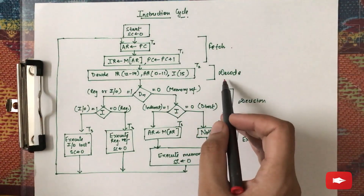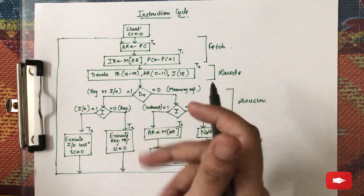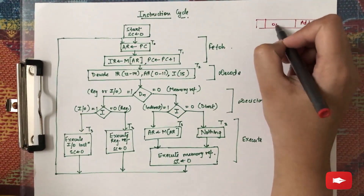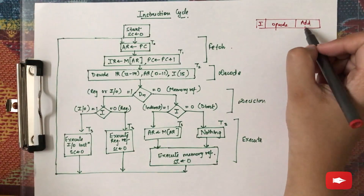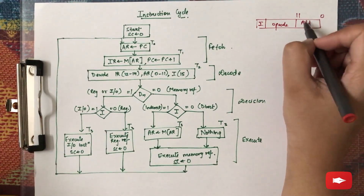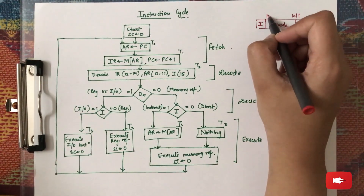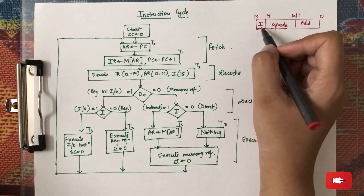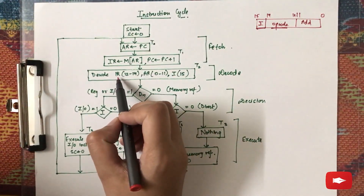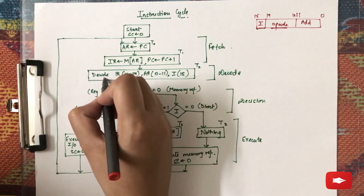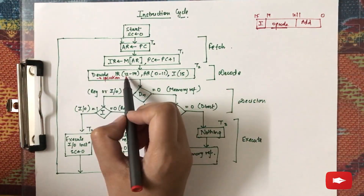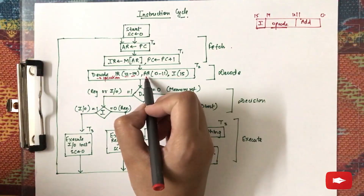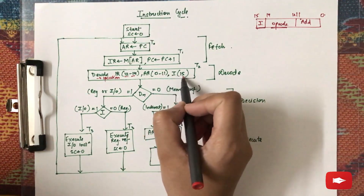In the decode phase, we are actually decoding the instruction format. The instruction format is divided into three parts: address, opcode, and the high part. Bits 0 to 11 are the 12 bits defining the address part, bits 12 to 14 are the three bits defining the opcode, and one bit defines the addressing mode — either direct or indirect. We decode the opcode from bits 12 to 14, the address register from bits 0 to 11, and I is the addressing mode at bit 15.